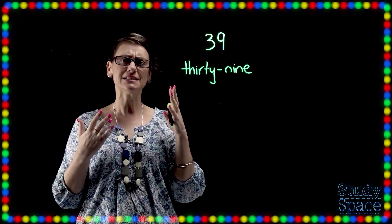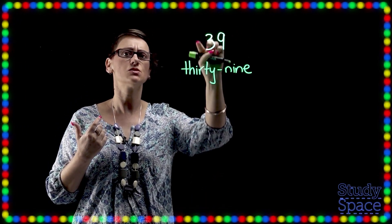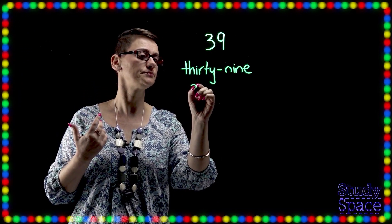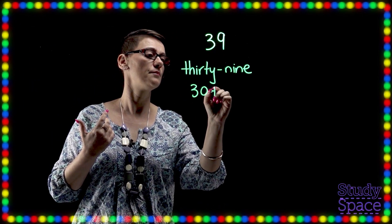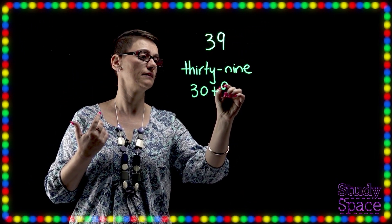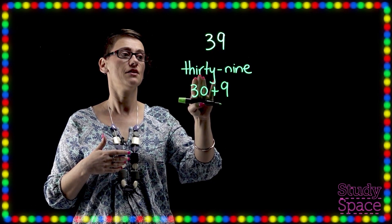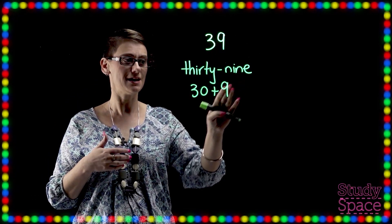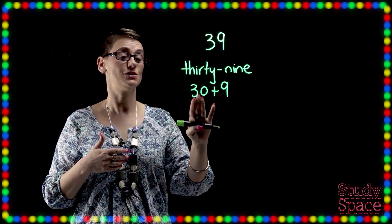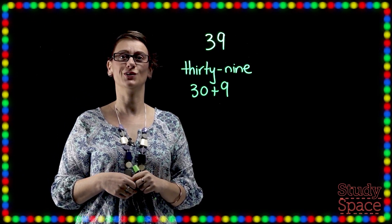Now we're going to split it into its place values. So what does this 3 represent, boys and girls? 30 plus my ones, which is 9. So 39, written as words, and 39 written as place values: 30 plus 9. Let's go see what it looks like using base ten blocks.